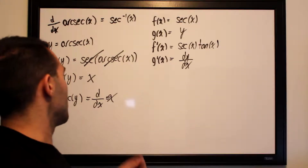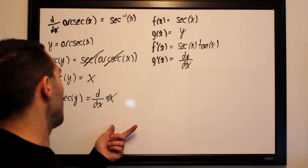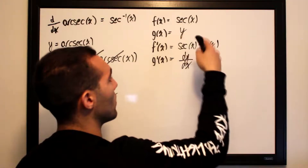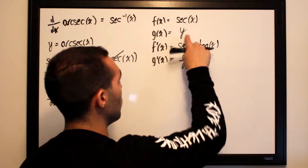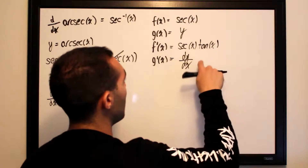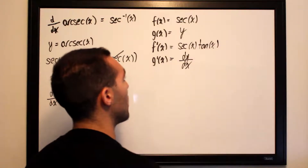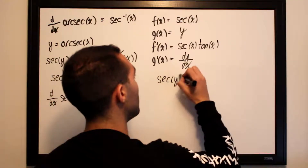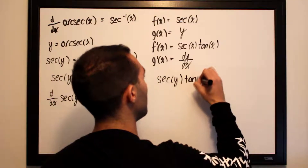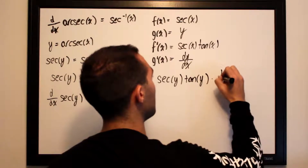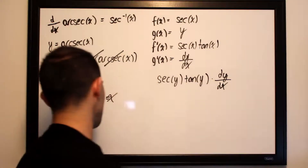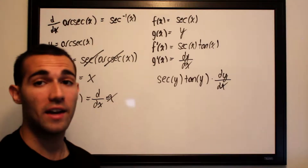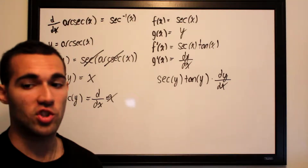To differentiate secant of y, we compose f prime of g: wherever we see x we substitute in y, then multiply by g prime. So this becomes secant of y times tangent of y, all multiplied by dy/dx. The derivative of the other side, d/dx of x, is simply one.